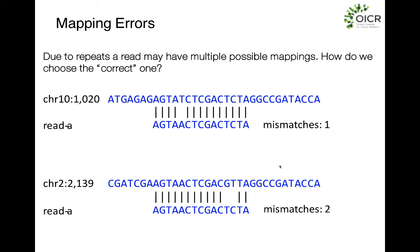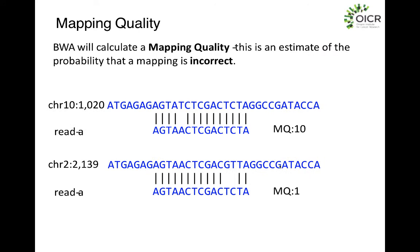Once the Burrows-Wheeler Aligner maps a read to all possible locations in the genome, a different problem arises: which mapping is correct? For example, is a read mapping to chromosome 10 position 1020 with one mismatch a better location than chromosome 2 position 2139 with two mismatches? The number of mismatches and the base qualities at those mismatches matter. The mapper takes the number of mismatches, number of indels, and base qualities at each position, and converts them into a mapping quality score to select the best alignment.